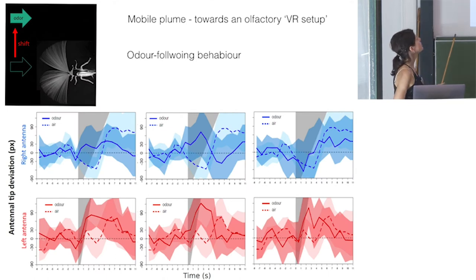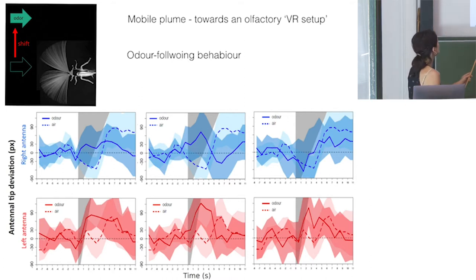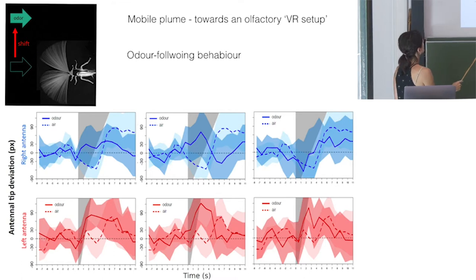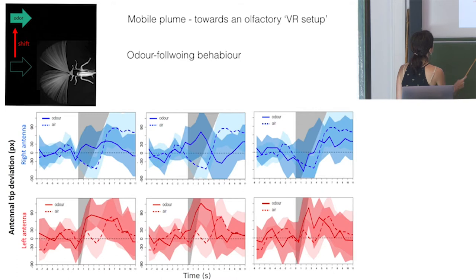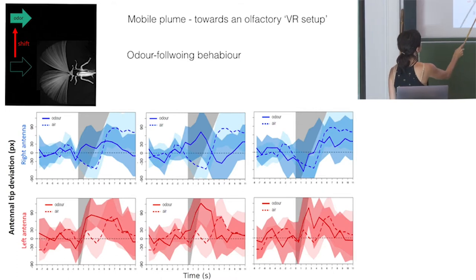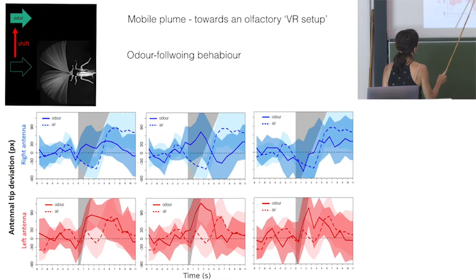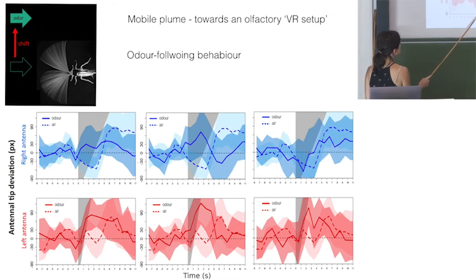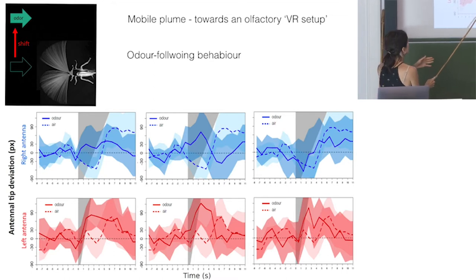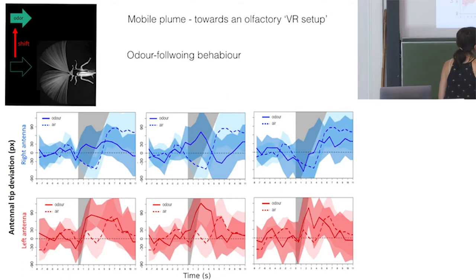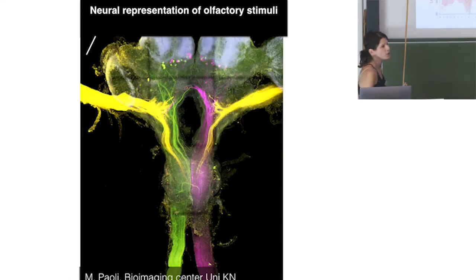We also tested whether animals follow a moving plume — and they do. When the odor moves in one direction, the left antenna follows, the right antenna follows somewhat as well. This behavior is not seen with a plain air plume, so it is specific to odorant stimulation.